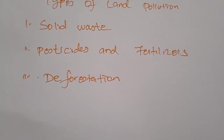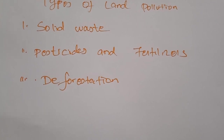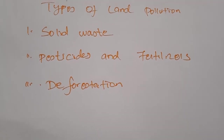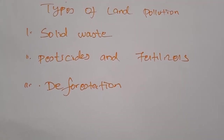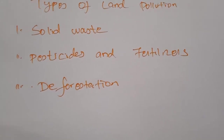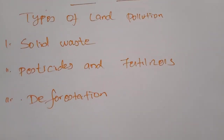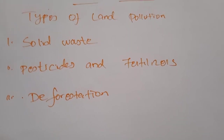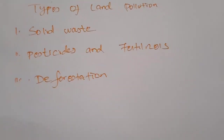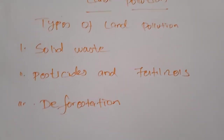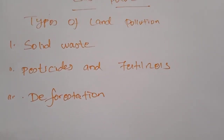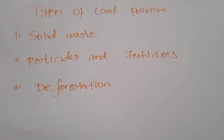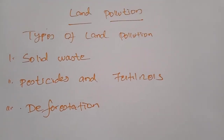Next, deforestation. Humans depend on trees for many things, including life itself. Trees absorb carbon dioxide from the air and release oxygen, which is needed for life. Forests help replenish soils and retain nutrients. Deforestation leads to land pollution. Deforestation is happening in many ways across our nation, and whenever it occurs it also creates land pollution.